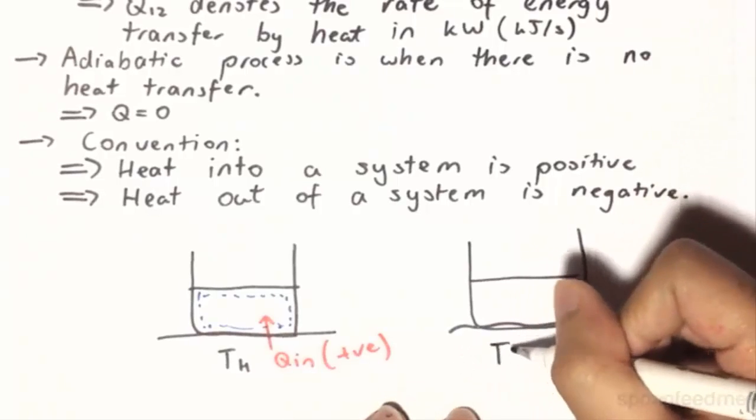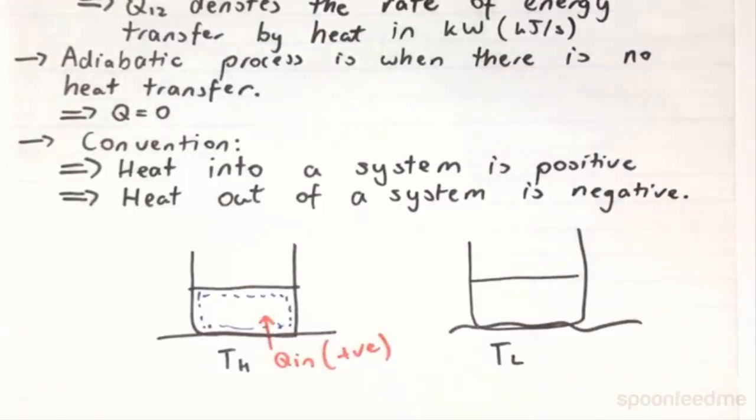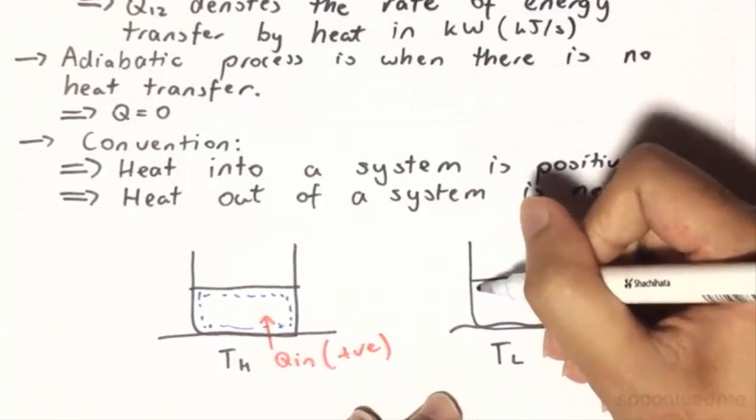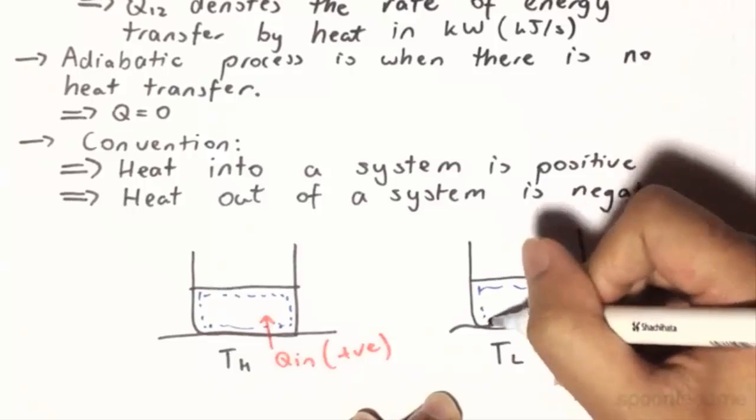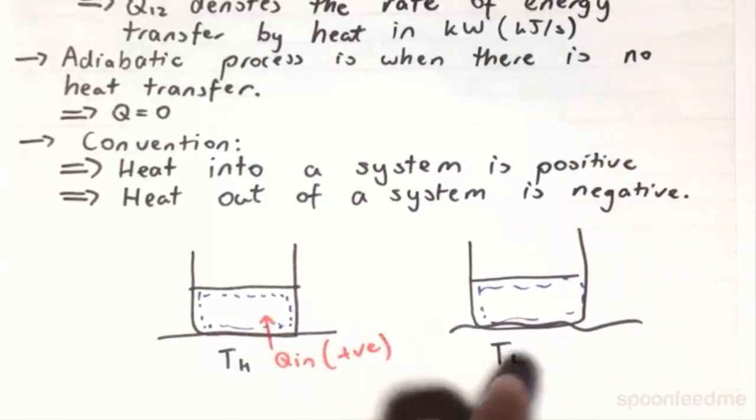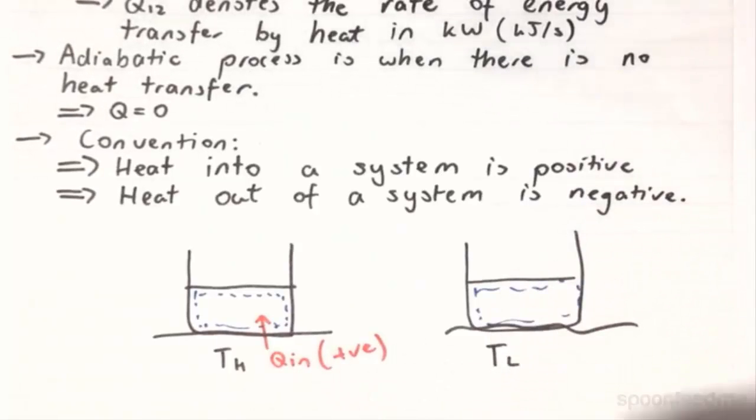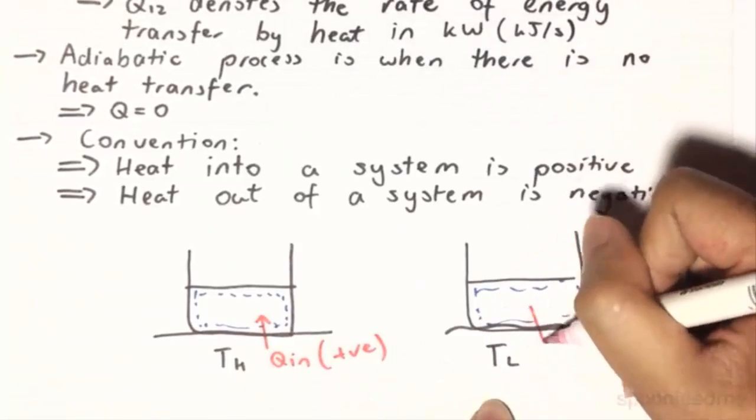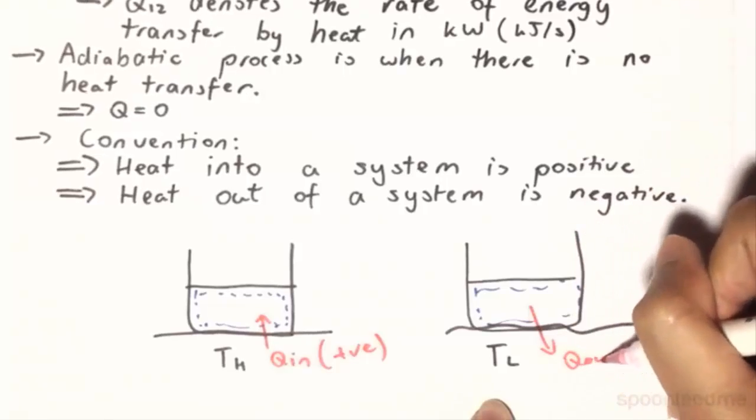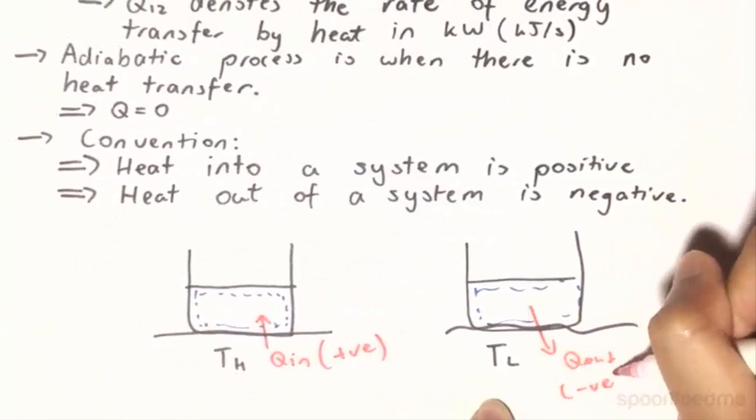and if you had the same system, then necessarily there will be some heat transfer from the hot water to the lower temperature. And so this will be Q out, which will be a negative number.